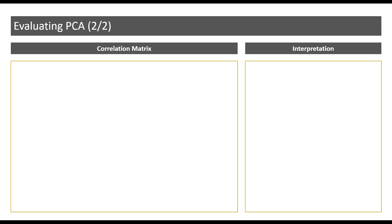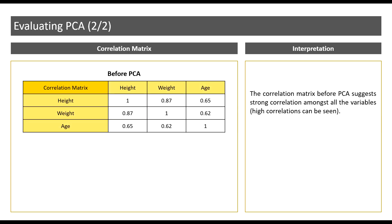If you can recall, one of the prerequisites of PCA is that the variables have to be linearly correlated, or interrelated in other words. So before performing PCA, we looked at the correlation matrix to check whether the variables were interrelated. From this correlation matrix, we concluded that the variables height, weight, and age are highly correlated amongst one another and are hence eligible for PCA.